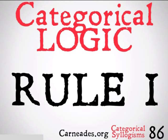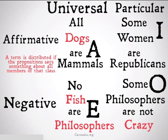The first one we'll be looking at is rule one. Before we can get there, we have to remember a piece of vocabulary we learned quite a while ago when we were first learning about syllogisms. It's called distributed. A term is going to be distributed if the proposition says something about all the members of that class. Universals distribute subjects, and negatives distribute predicates.